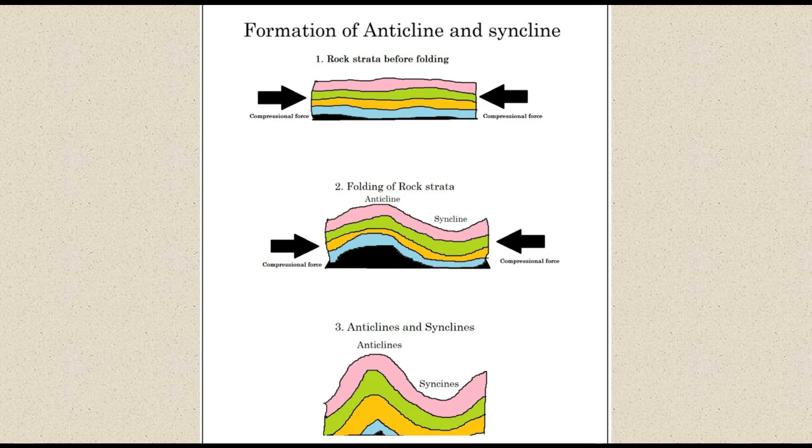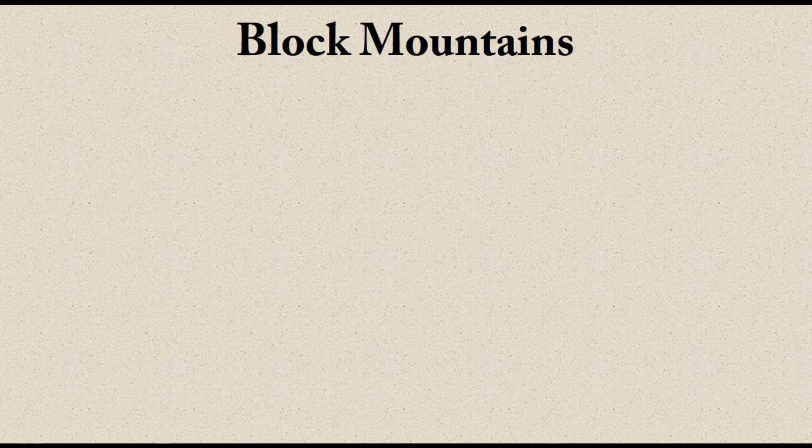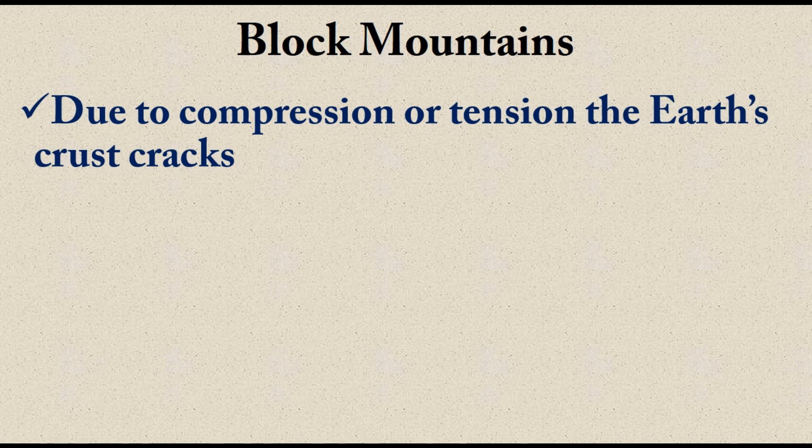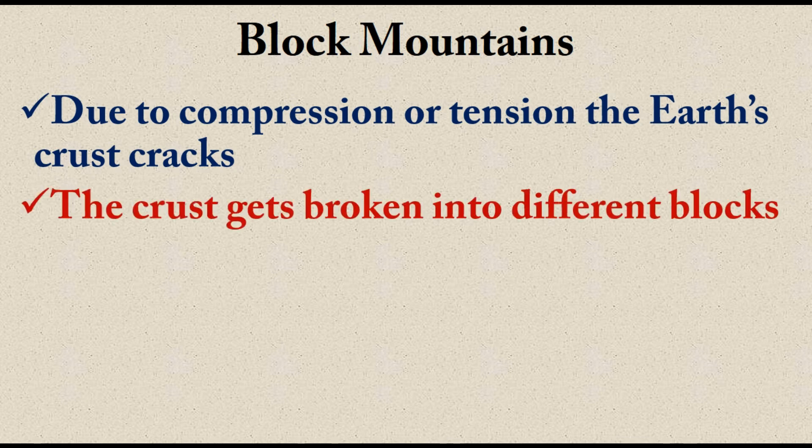Moving on to block mountains — we have just heard about fold mountains, which are formed due to folding of rock. Now we have another category called block mountains, or fault block mountains. Due to compression or tension, the earth's crust sometimes develops cracks called fault lines, and the crust gets broken into different blocks.